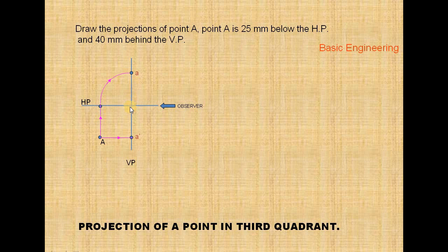This is the intersection of the horizontal plane and the vertical plane. You get the top view above the intersection and the front view below the intersection point. This intersection point is called the XY line. First you have to draw the XY line — this intersection line. Now you have to draw the projection line.